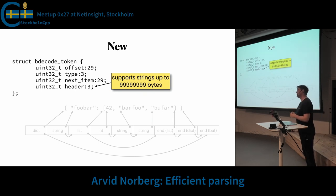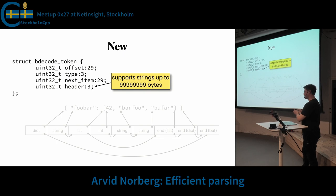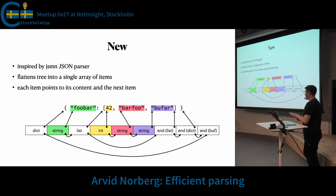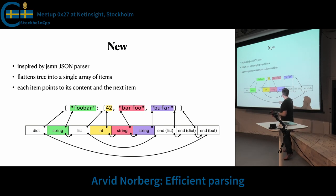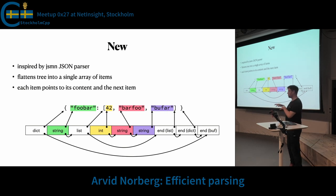Question: Did all the implementations lead to the same abstract syntax tree after parsing? Answer: Everything points back into the original buffer, so you have to keep that buffer around, and technically they're not even pointers — they're indices into it. There's no explicit tree. The tree is implied by the next pointers. Within a list, the next pointer is just the next item in the list, but there could be another key in the dictionary — then there would be another string and value. So you still get the tree structure, but implied through the next pointers.